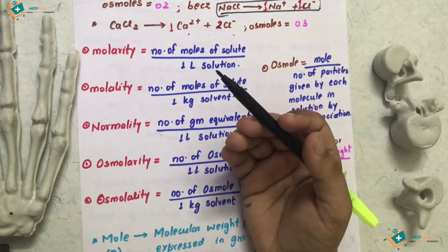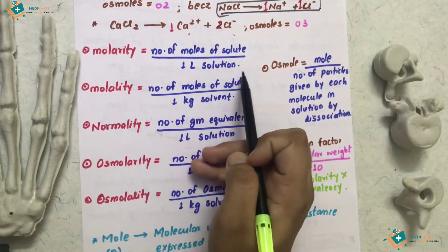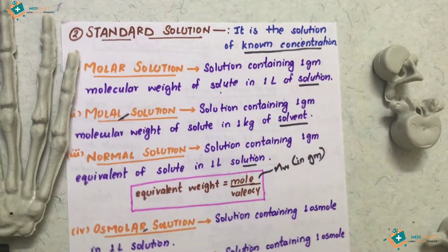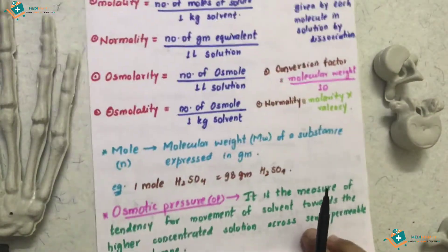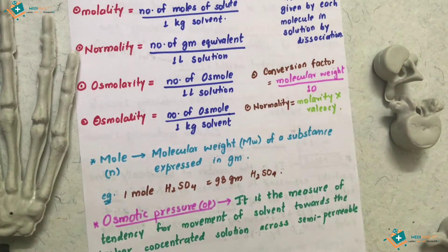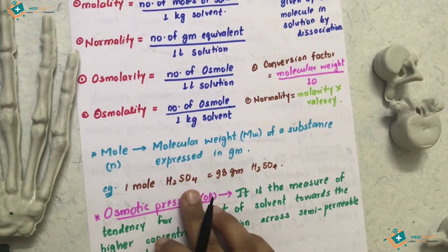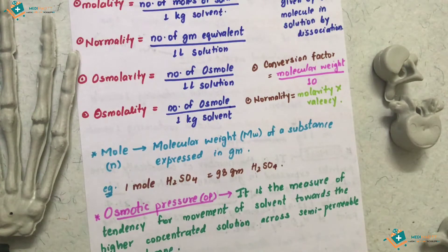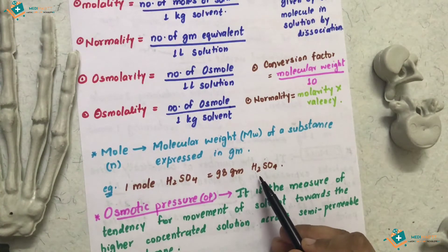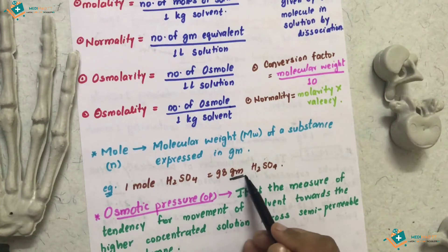Now the formula: molarity is the number of moles of solute per 1 liter of solution. One mole is the molecular weight of a substance expressed in grams — also called 1 gram molecular weight. For example, H2SO4 has a molecular weight of 98, so 1 mole of H2SO4 is 98 grams.